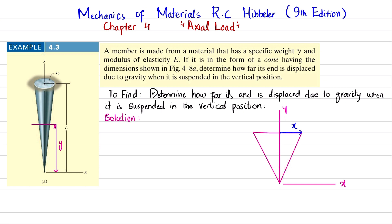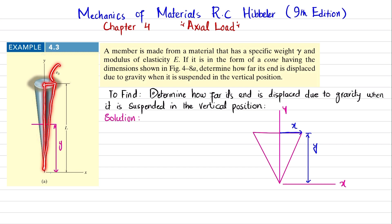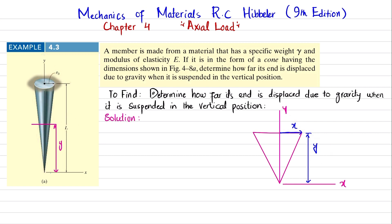This cut is at a distance y from the base axis. Since this forms a right-angle triangle, and the full cone is also a right-angle triangle, by similar triangles: x/y = r₀/L, therefore x = (r₀/L)·y. This gives the relationship of the cone's radius with respect to y.